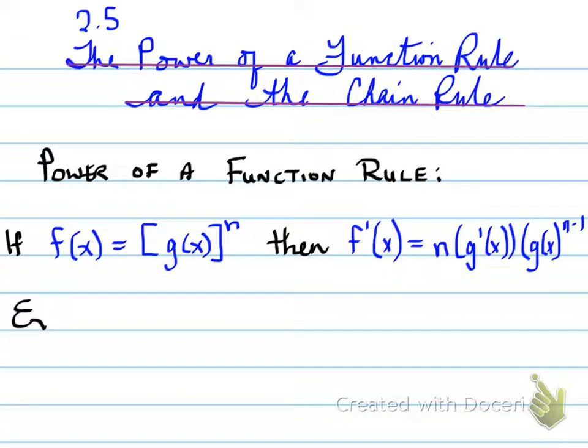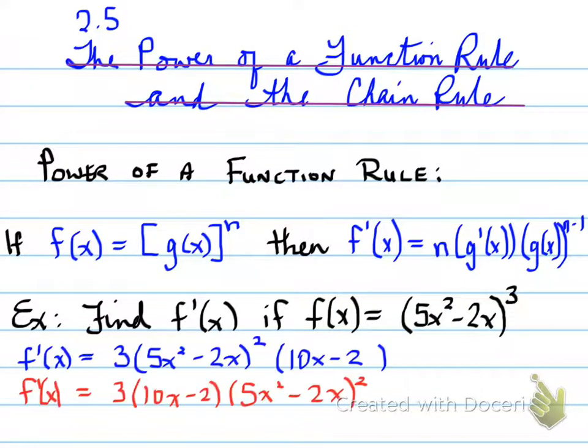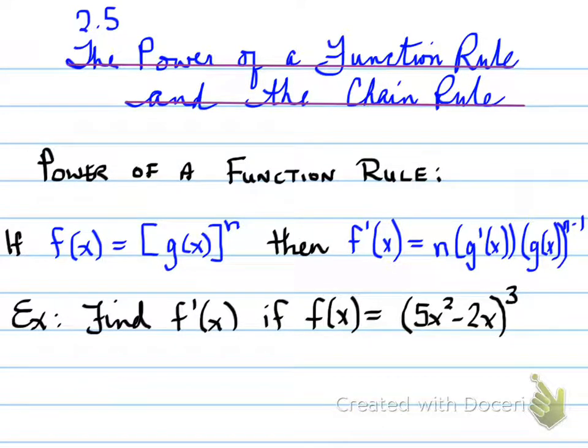So a better way to look at this is through an example. Find f prime at x if f at x is equal to 5x squared minus 2x all raised to the power of 3. So you need to find the derivative. Well, f prime of x is equal to, now let's look at all of this and where that came from.